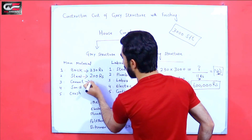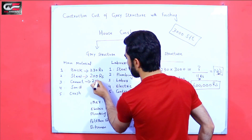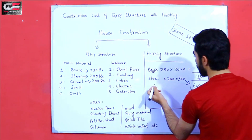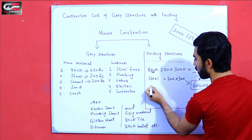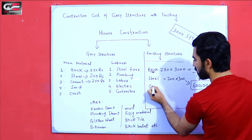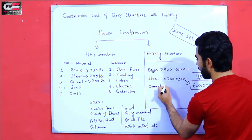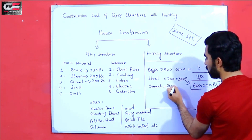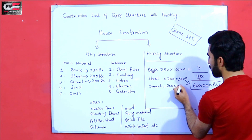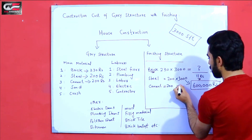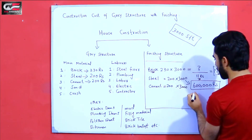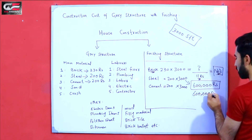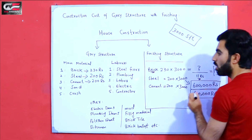Cement is also 200 rupees per square feet. So multiply 200 by 3000, which gives 6 lakh rupees for cement.